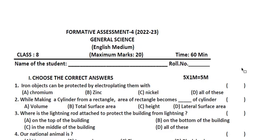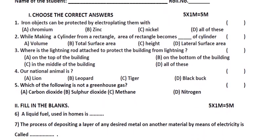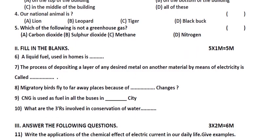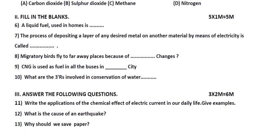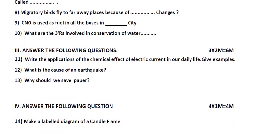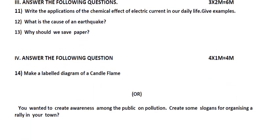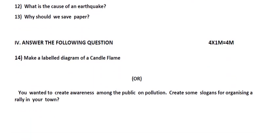Hi students, eighth class format for science paper. The science paper: five into one is equal to five marks, otherwise five windows equal five marks. In the next, three into eight equals six marks, and in the next four into one is equal to four marks. In this paper, hundred percent of paper covered to clear up the conditions.